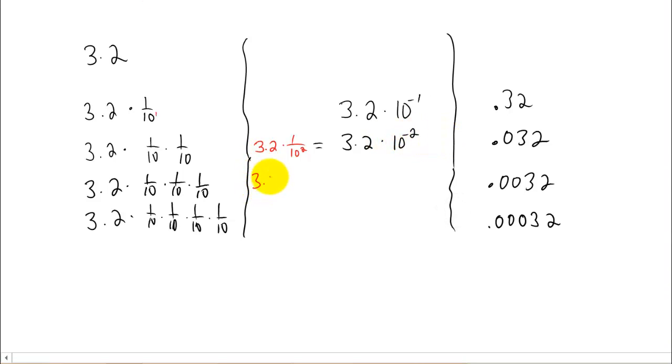We can continue this pattern. The next line is going to be 3.2 times 10 cubed, because you have 10 multiplying by itself 3 times in the denominator down here. Again, copy down the 3.2. 1 over 10 cubed can be written as 10 to the negative third power. And the last line, if you just follow the patterns, can be written as 3.2 times 10 to the negative fourth power.